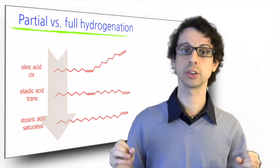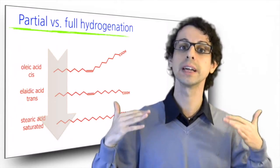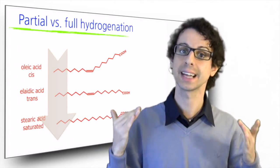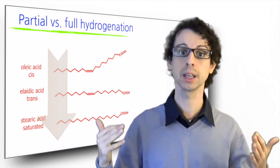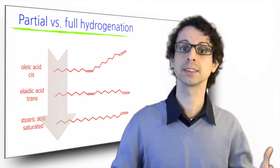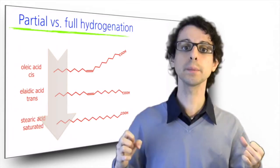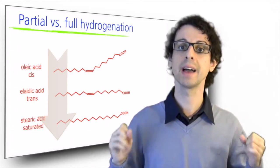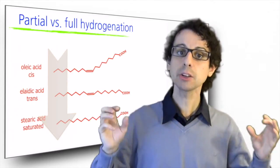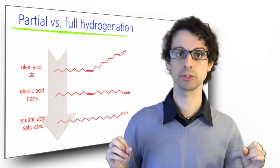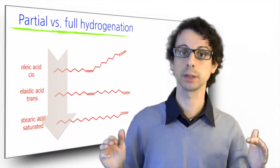The process of hydrogenation is almost never done to a full extent until every unsaturated fat becomes saturated, because then you would end up with a product that's too solid. You want something you can easily spread without having to use a hammer. So the actual process is a partial hydrogenation, to have a semi-solid product.